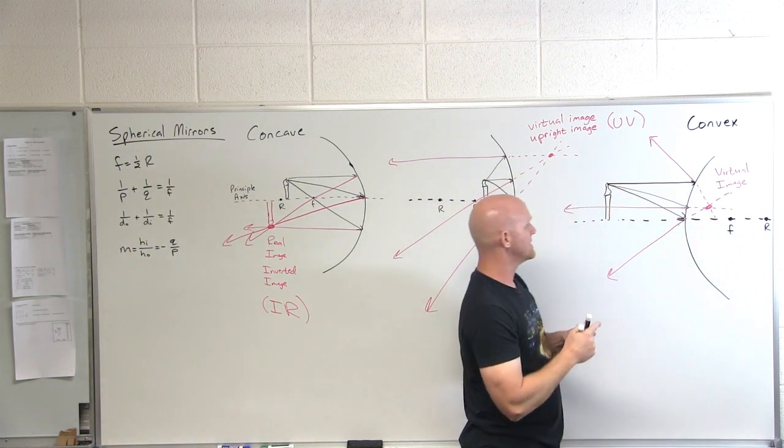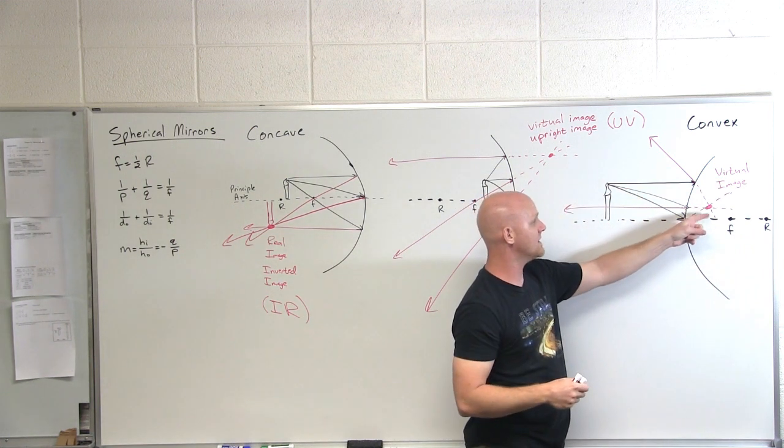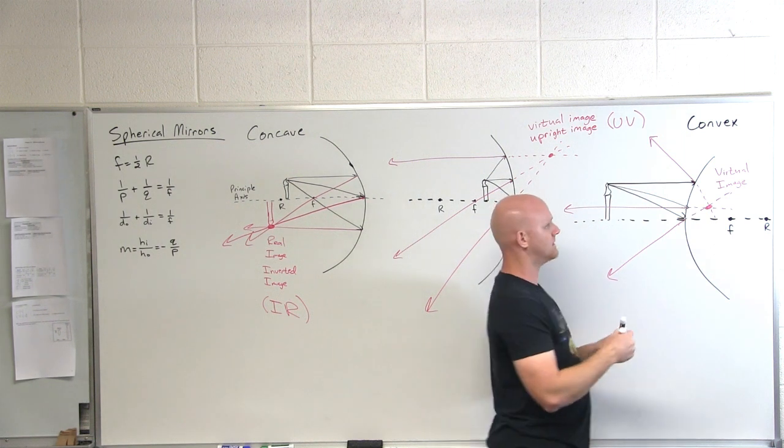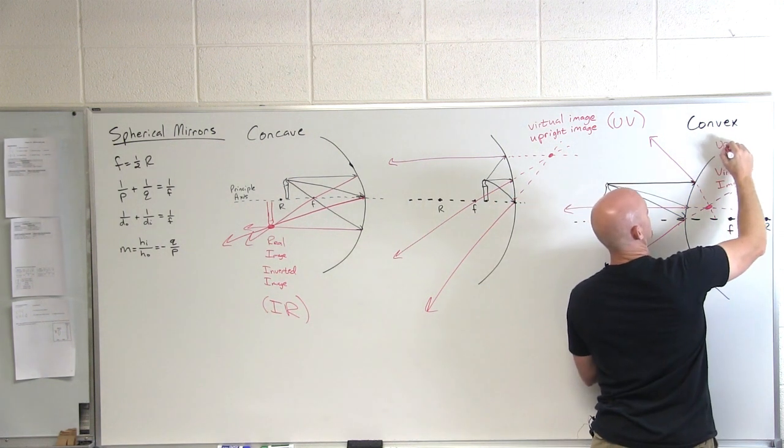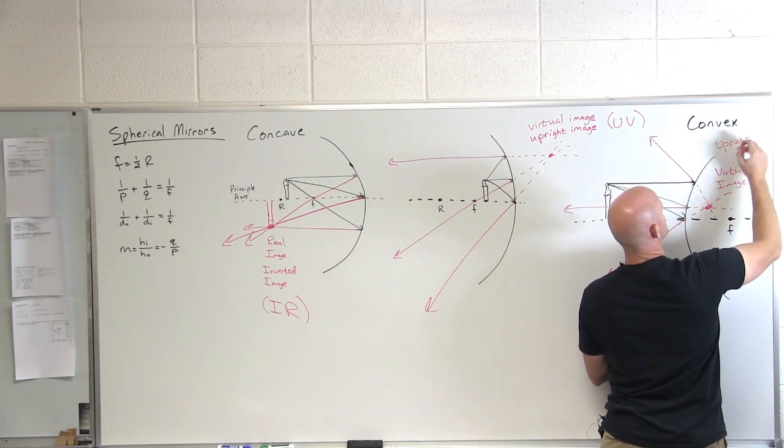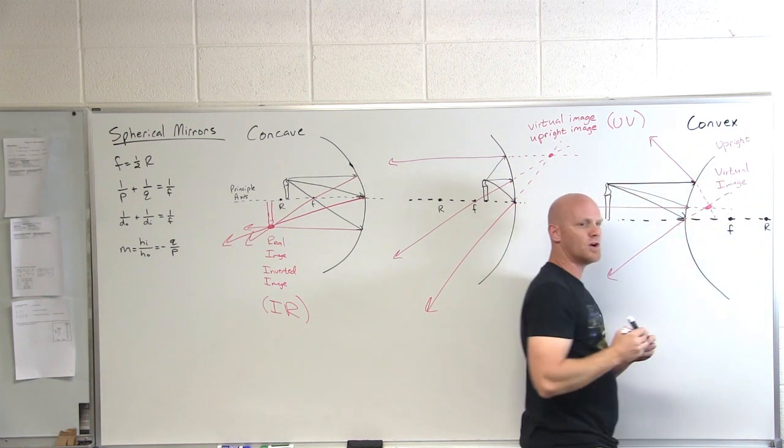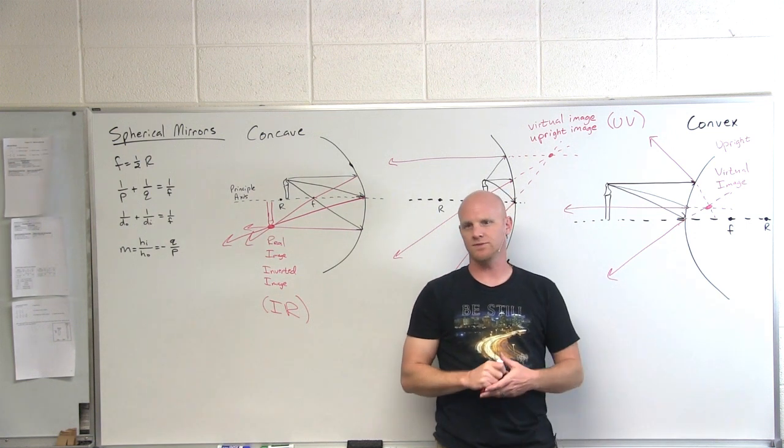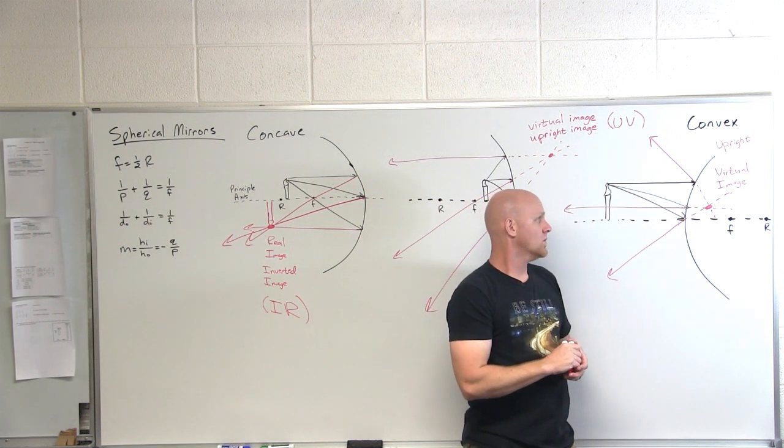And in this case, your object was above the principal axis and your image is above the principal axis. So what kind of images does that imply? Yeah, it's upright. And like we said, virtual and upright always go together. If you know it's virtual, you know it's upright. If you know it's upright, you know it's virtual.